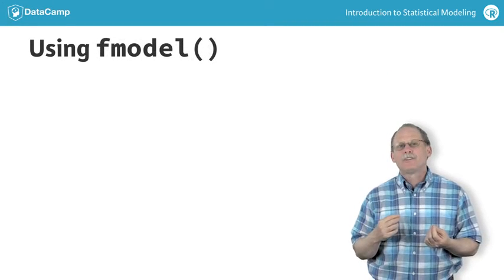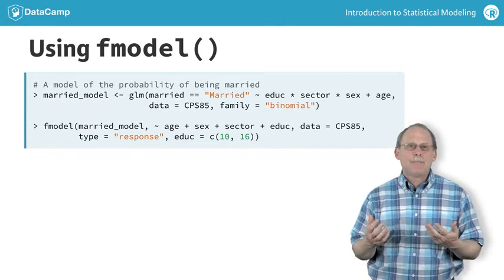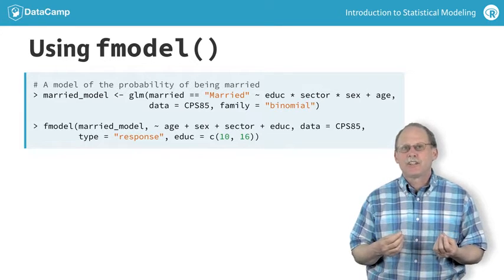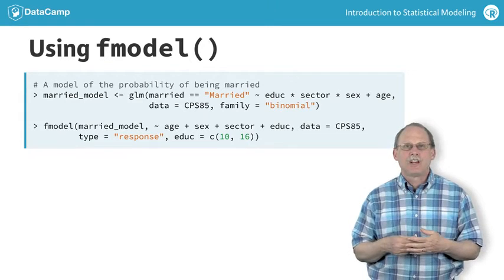The other helper function is fmodel. This graphs model functions. As an example, consider a model of whether a worker is married based on their education, sector of employment, sex, and experience on the job.